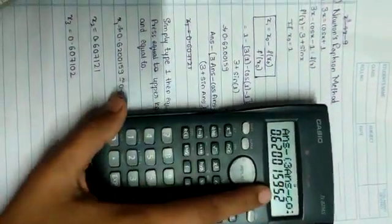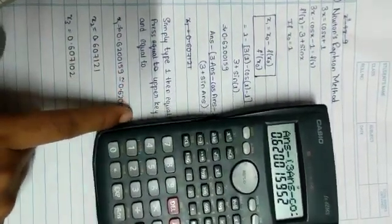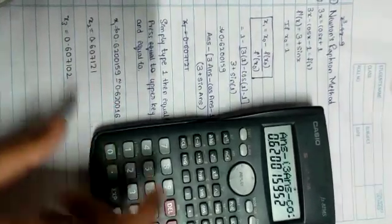This is x1 value. x1 value is 0.6200159 similar to 0.620016.